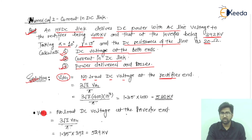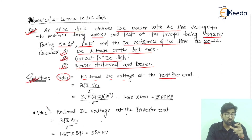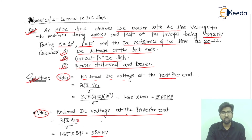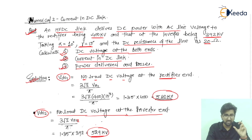Now V_DO2 is the no-load DC voltage at the inverter end. Using the same formula but with 392 kilovolts, you get V_DO2 = 529 kilovolts. So on the rectifier side we get 540 kV and on the inverter end we get 529 kV — there is a drop in voltage due to the DC load resistance on the DC link.